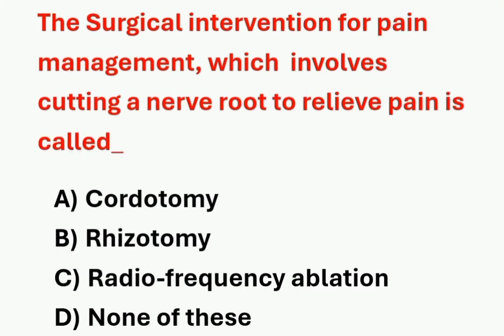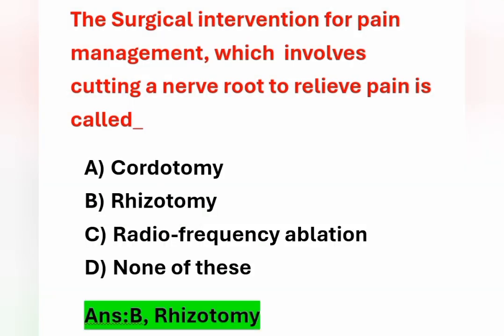Next question: the surgical intervention for pain management which involves cutting a nerve root to relieve pain is called what? Options: Option A – chordotomy. Option B – rhizotomy. Option C – radiofrequency ablation. Option D – none of these. The surgical procedure to cut the nerve root to relieve pain is called rhizotomy. Option B is the correct answer.